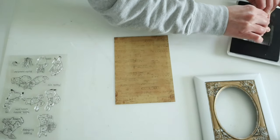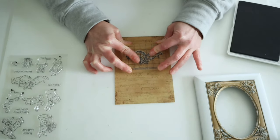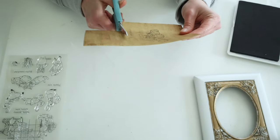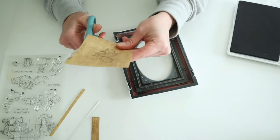I'm going to use some of my archival ink and stamp these three little sleeping bunnies onto my music sheet. Then all I had to do was cut that down and add this to my frame.